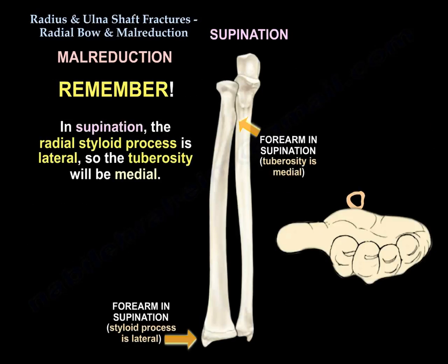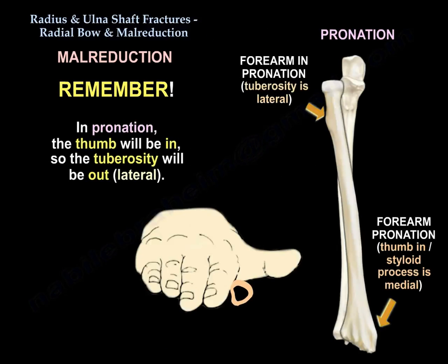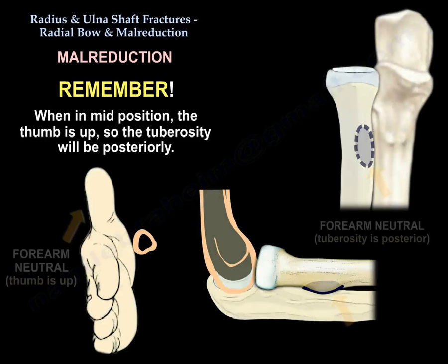In supination, the radial styloid is lateral, so the bicipital tuberosity will be medial. In pronation, the thumb turns in, so the tuberosity will be out — lateral. In mid-position, the thumb is up, so the tuberosity will be posterior.